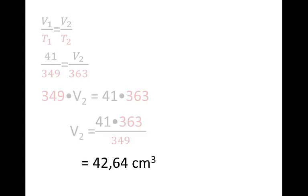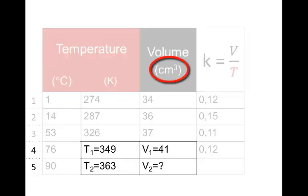We substitute values into the equation, cross multiply and solve for V2. Our answer is 42.64 centimeters cubed. How do we know that the unit is centimeters cubed? Because V1's unit was centimeters cubed.